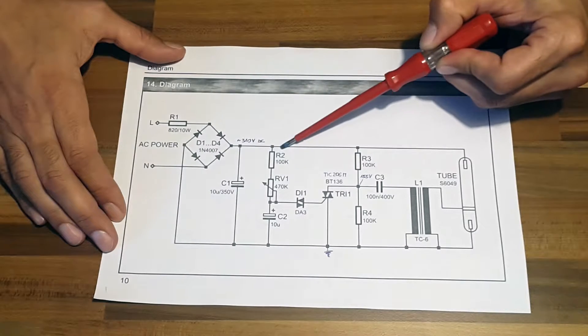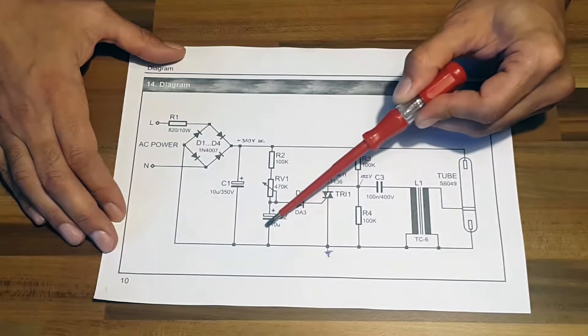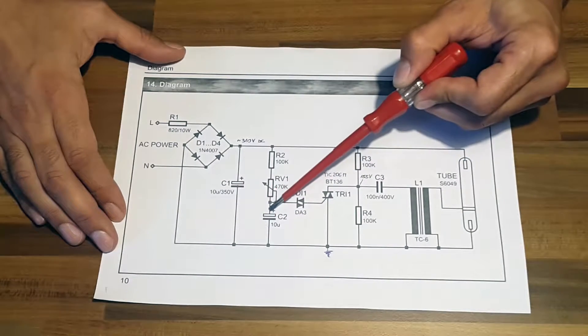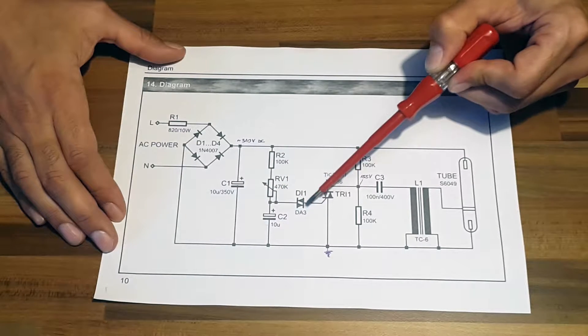The combination of R2 and RV1 limit the charging rate of C2 capacitor. The voltage of C2 rises and when it reaches around 32 volts, the diac of type DA3 starts conducting.